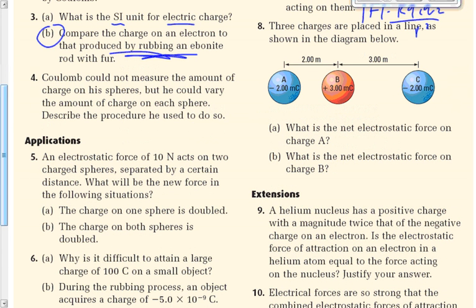Quick question about number 8 — the units. We see 'mC' here. An mC is a millicoulomb. A millicoulomb is 10 to the minus 3, or one thousandth. If you're ever unsure about those prefixes, just check the data sheet — it's always there. It's easy to get mixed up, especially between milli (10⁻³) and micro (10⁻⁶). A lot of people confuse those two.